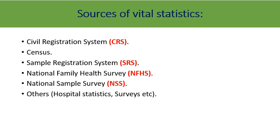The primary source for the numerator — the number of births or deaths — is the civil registration system. The primary source for the denominator, the mid-year population, comes from the census, because we need birth rates for different subgroups such as SCs, STs, or particular occupational groups. There is one more important source for the numerator: the sample registration system. Others include the national family health survey, national sample survey, hospital statistics, and surveys.